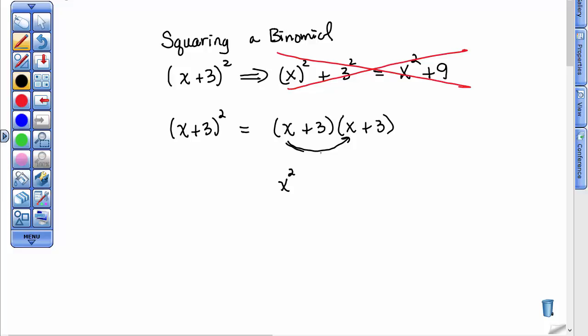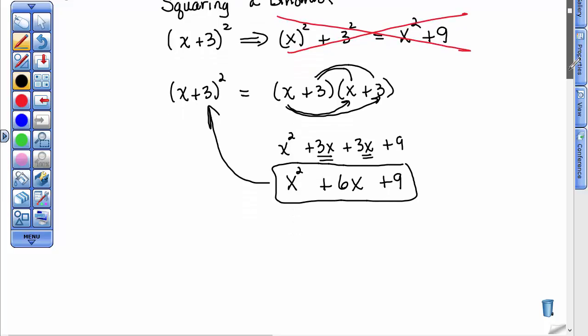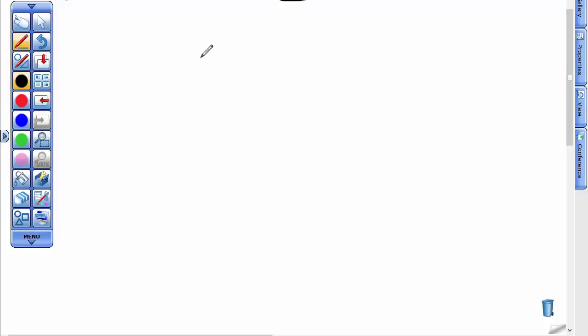There is kind of a formula you could do with this, but I just say FOIL it. x times x is x², x times 3 is 3x. What happens in these squared binomials is the middle terms are the same, so here's another 3x, and then finally 3 times 3 is 9. Yes, you do have an x² and you do have a 9, but in the middle you have two terms that are alike that need to be combined. 3x+3x is 6x. Here is our answer to (x+3)²: x²+6x+9, not x²+9.